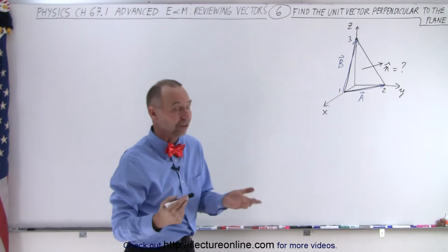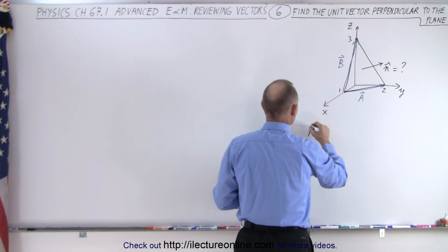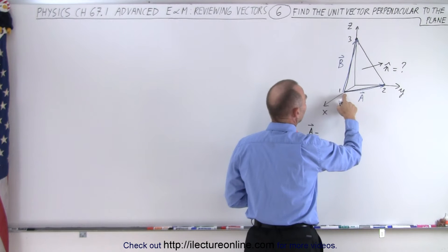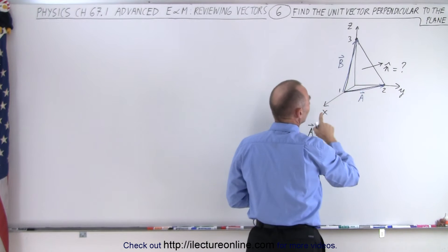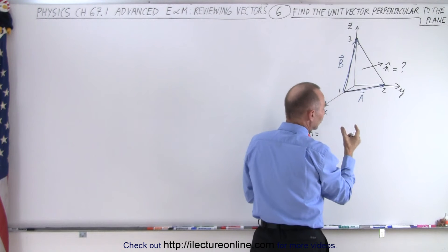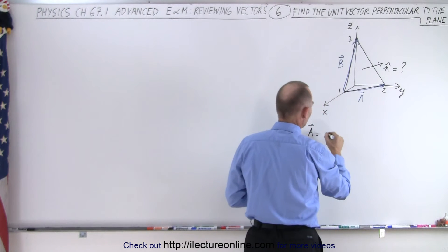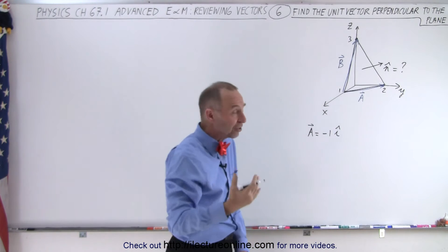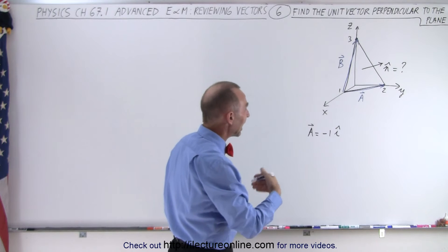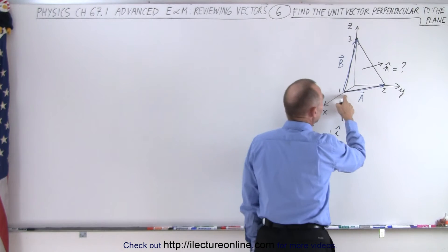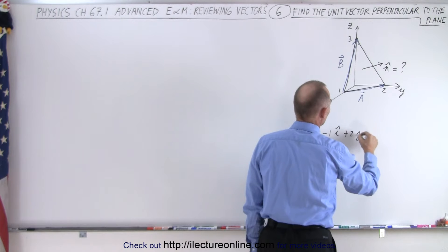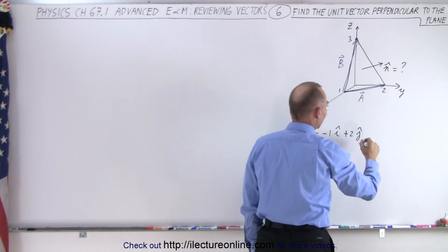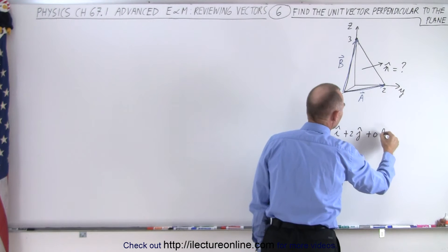We need to define the two vectors A and B. Vector A starts at x equals 1 and ends at x equals 0, so the magnitude in the x direction will be negative 1. Instead of using x, y, and z, I'll use i, j, and k. So it will be minus 1 in the i direction, plus 2 in the j direction, and plus 0 in the k direction because vector A lies in the x-y plane.